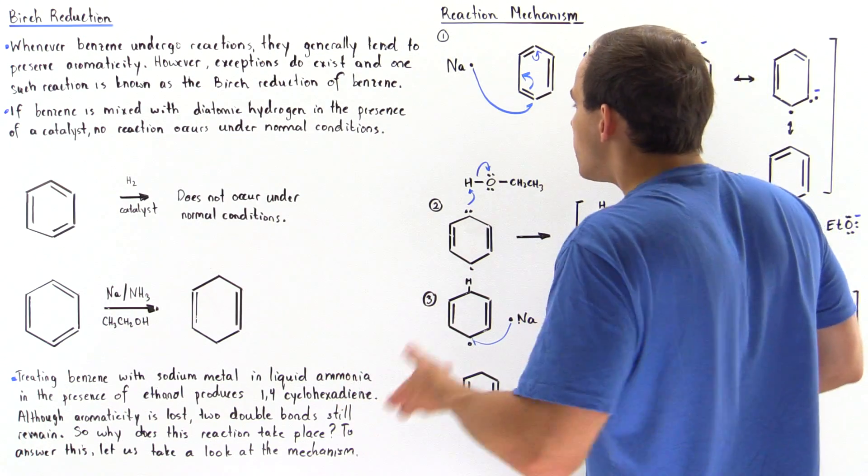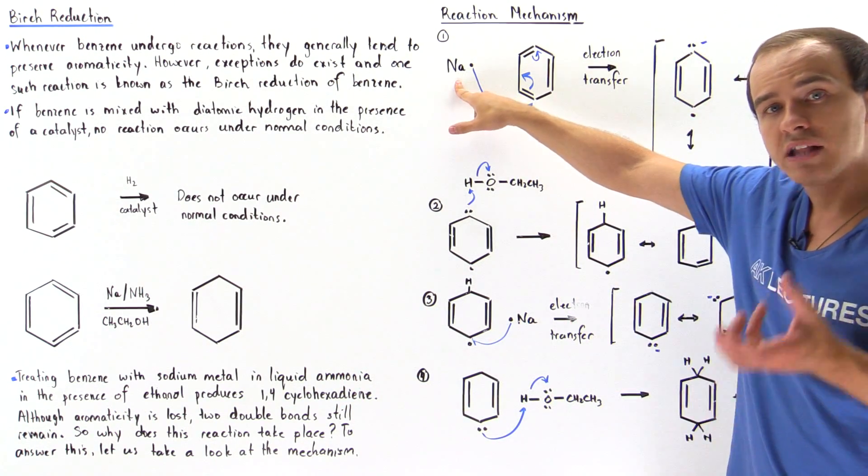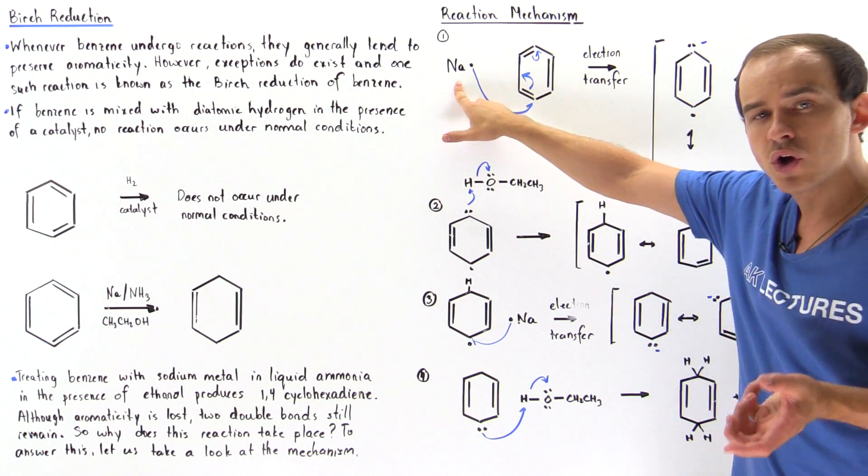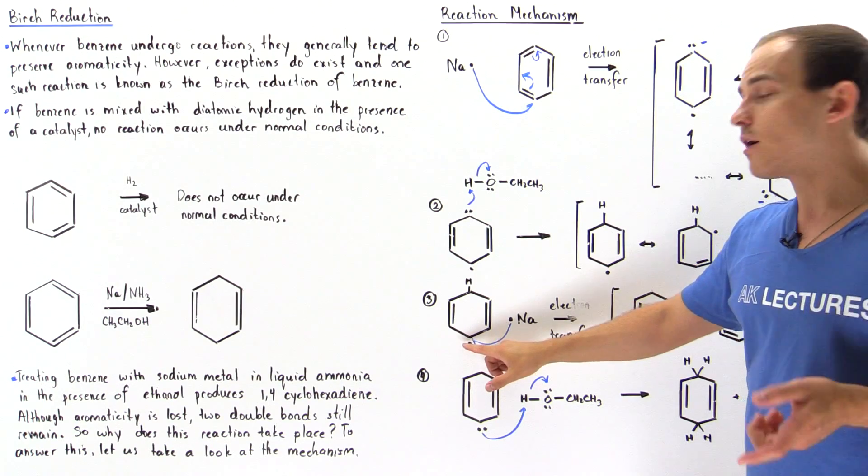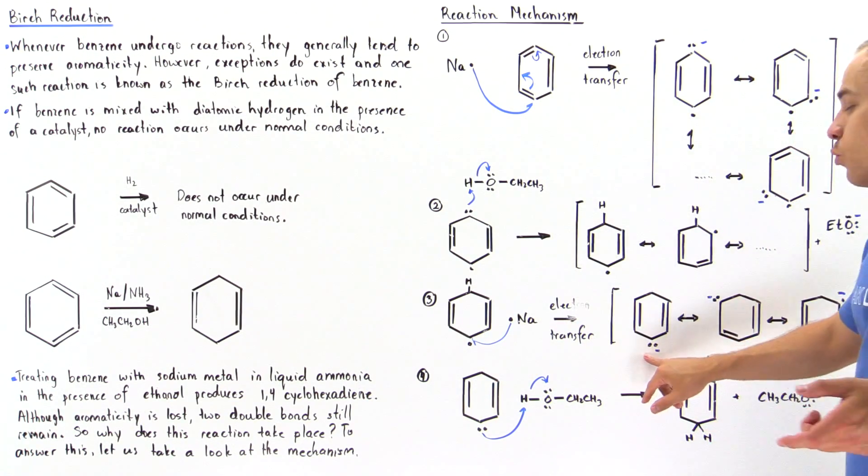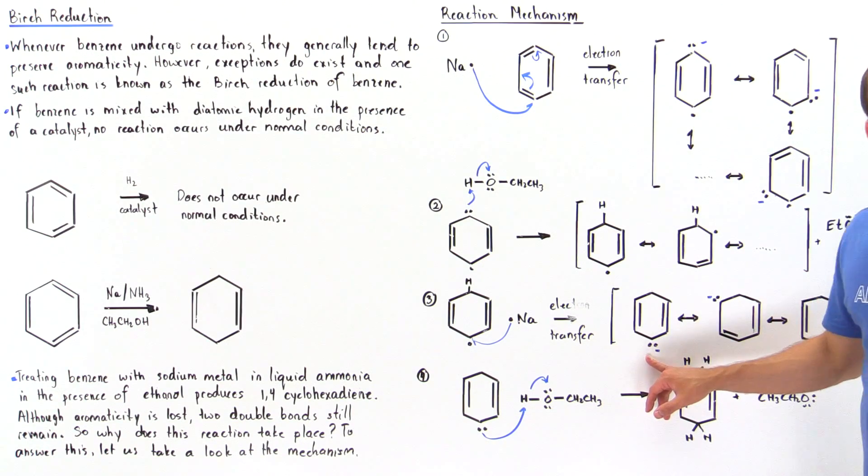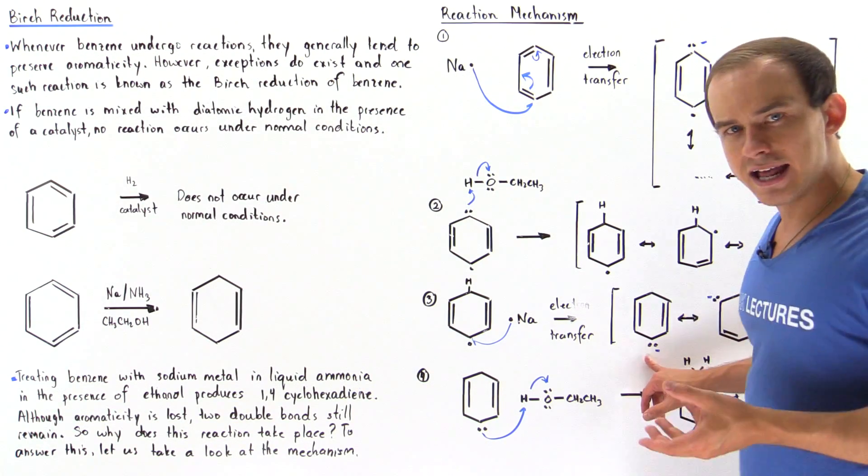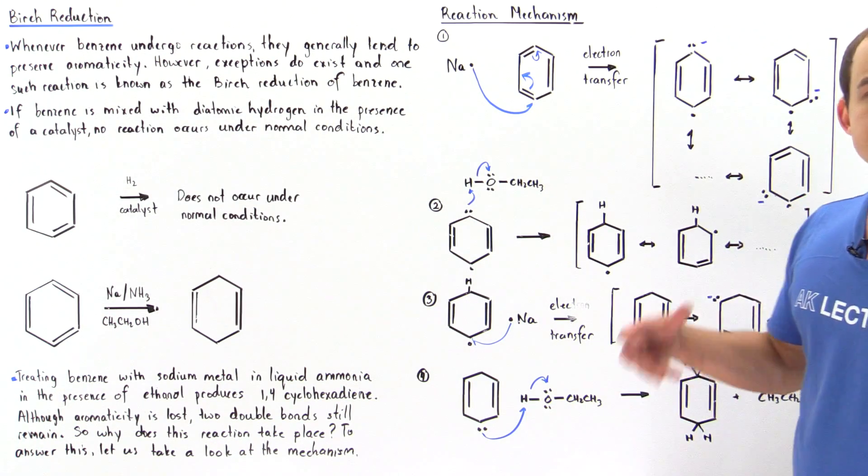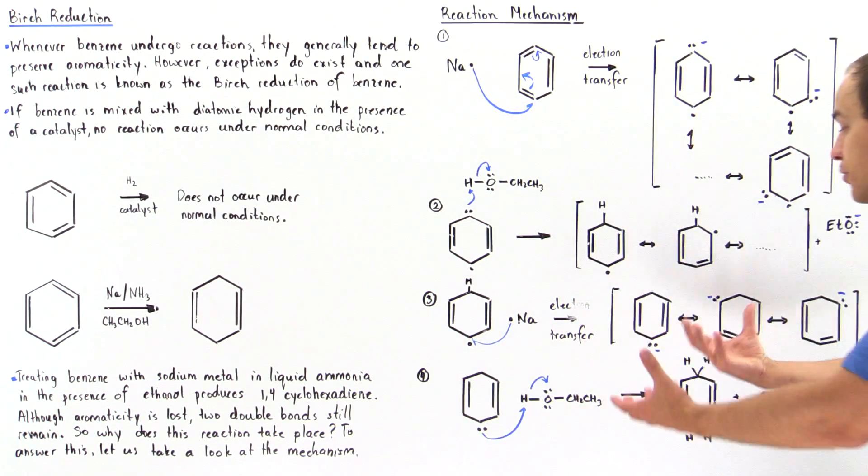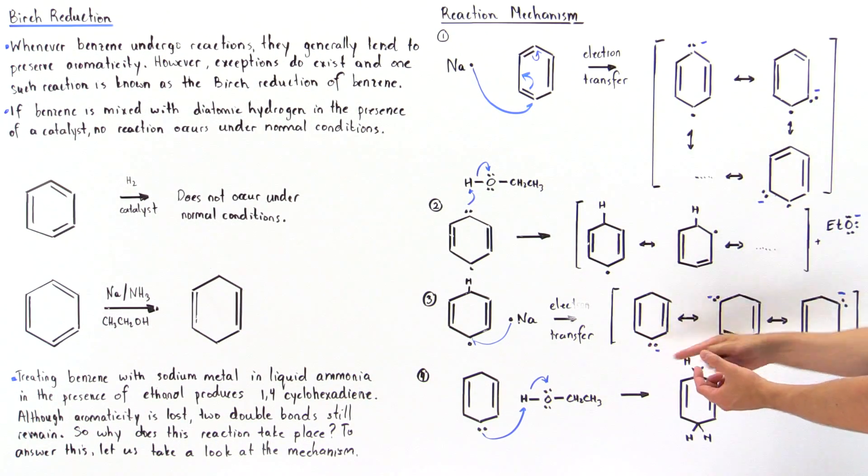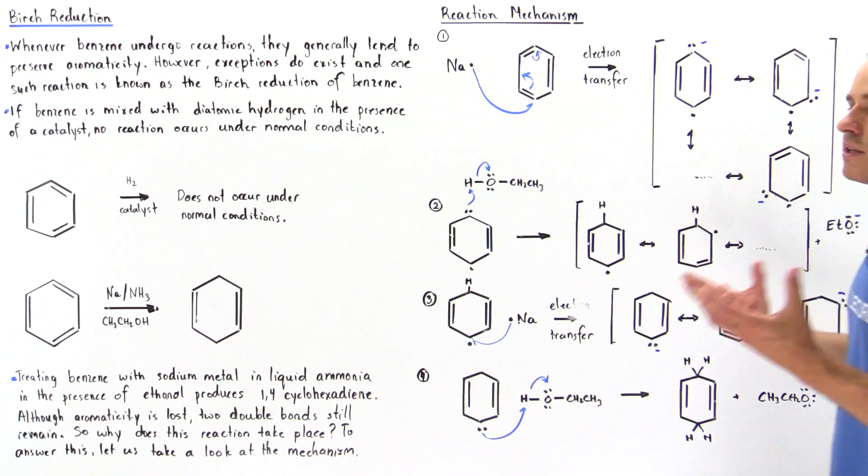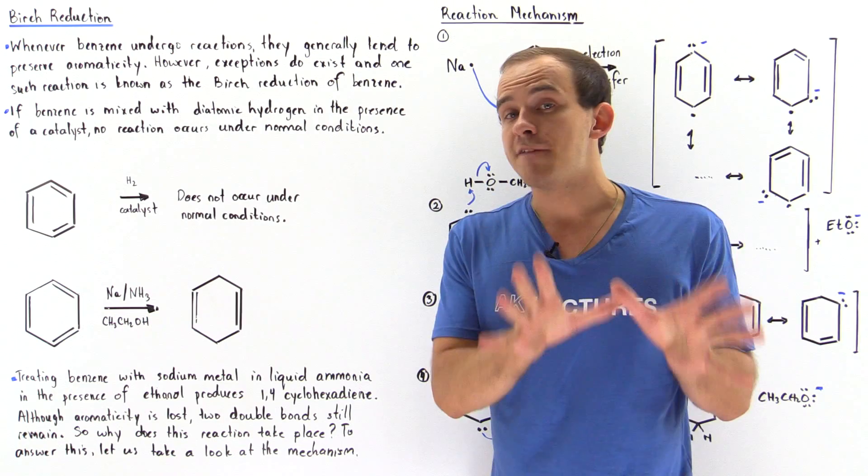In the third step, we take yet another sodium metal atom that contains an electron, and that second electron is transferred onto this carbon atom. And now we have two electrons on this carbon atom, and once again, this intermediate is resonance stabilized. All this electric charge and all this electron density is delocalized among these carbons, and that, once again, is a stabilizing effect.